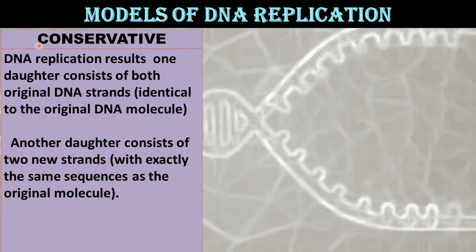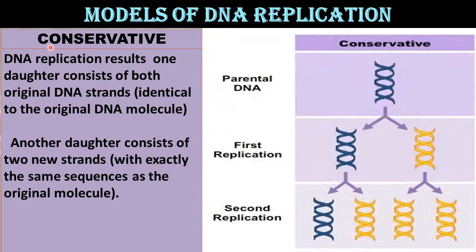There were three models for how organisms might replicate their DNA: conservative, semi-conservative, and dispersive. In the conservative model, DNA replication results in one molecule that consists of both original DNA strands — identical to the original molecule, shown here as the same blue-colored strands — and another molecule that consists of two new strands with exactly the same sequence, shown as new yellow-colored strands.